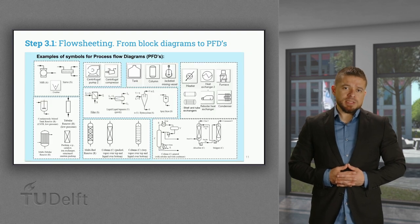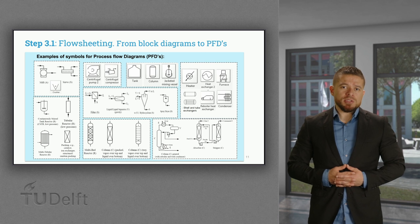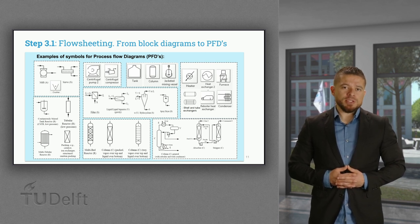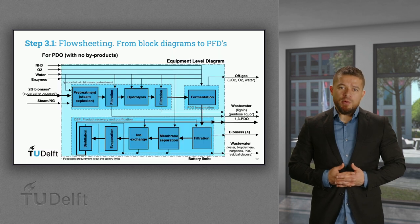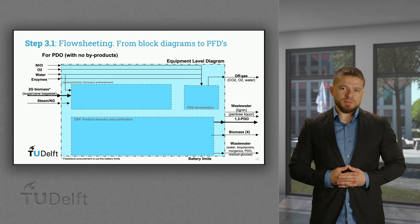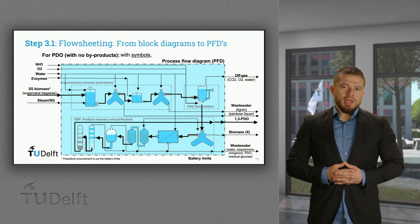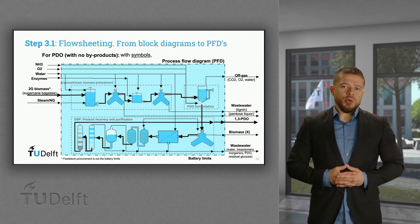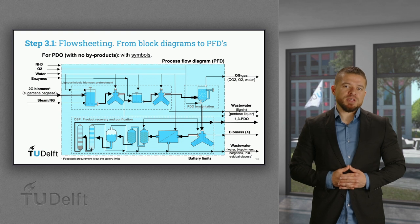The next level of flow sheeting is the PFD, or process flow diagram. In this case, individual blocks for each process unit are replaced by symbols that represent the actual process. You can see more examples in the slide for multiple operations and processes, including reactive systems and multiphase separation units. We then use those symbols in our block diagram at the equipment level by replacing the blocks with different symbols representing the individual process units. Since the symbols are not standardized, you can make your own choices, but they should be consistent and visually informative throughout the PFD.